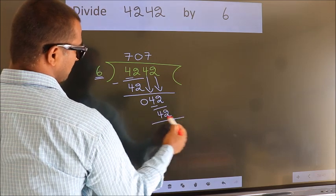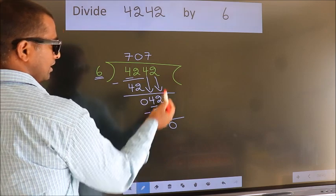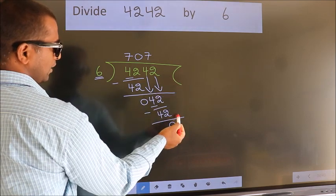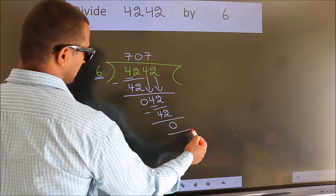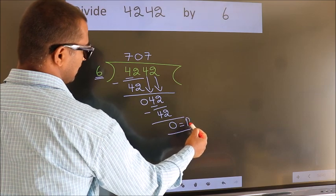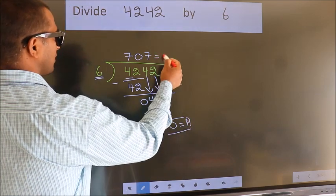Now we subtract. We get 0. No more numbers to bring it down. So we stop here. This is our remainder. This is our quotient.